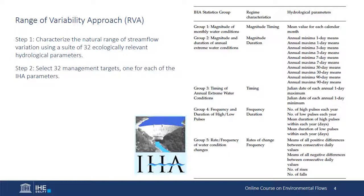Step one is to apply IHA and quantify the 32 parameters listed in the table. You've already seen these in a Unit 6 lecture and your initial practice with the IHA software. Step two involves setting management targets for each of the 32 parameters, ensuring that the management flow regime does not exceed established ranges of variability for any target. Ideally, the ranges of acceptable variability will be based on knowledge of flow ecology relationships in the published scientific literature. In lieu of this knowledge, the authors suggest establishing initial ranges of plus or minus one standard deviation from the mean value of each parameter, which corresponds to targets that would naturally be met approximately 68% of the time, or approximately seven out of every 10 years.